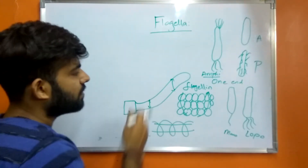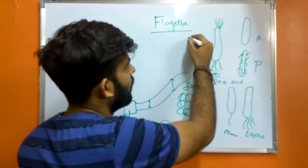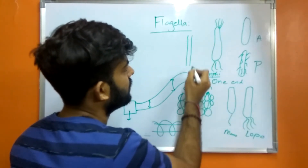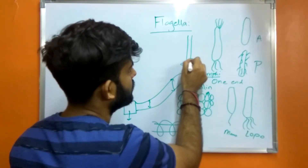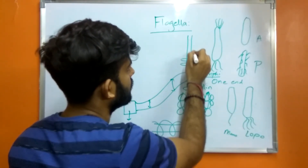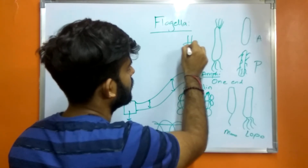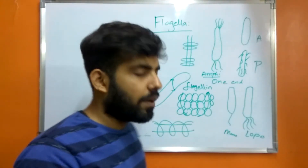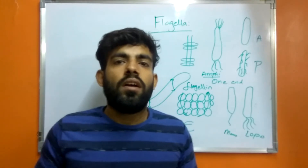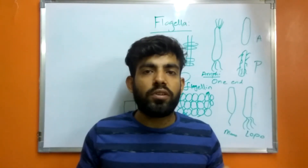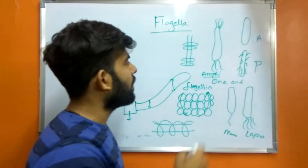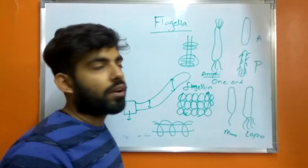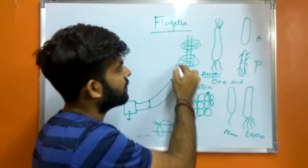The basal body is made up of a central rod which is inserted into a pair of rings. The rings are variable in different types of organisms. In gram-positive organisms there is only one pair of rings, but in gram-negative organisms there are two pairs of rings.